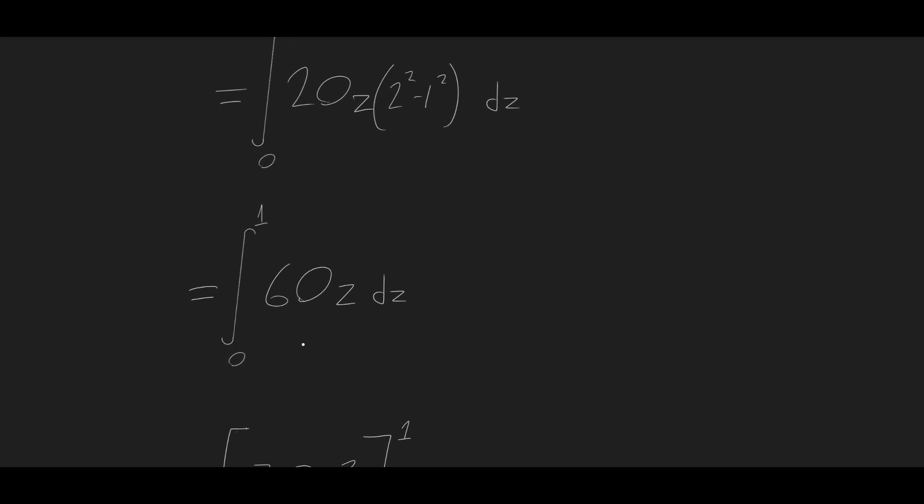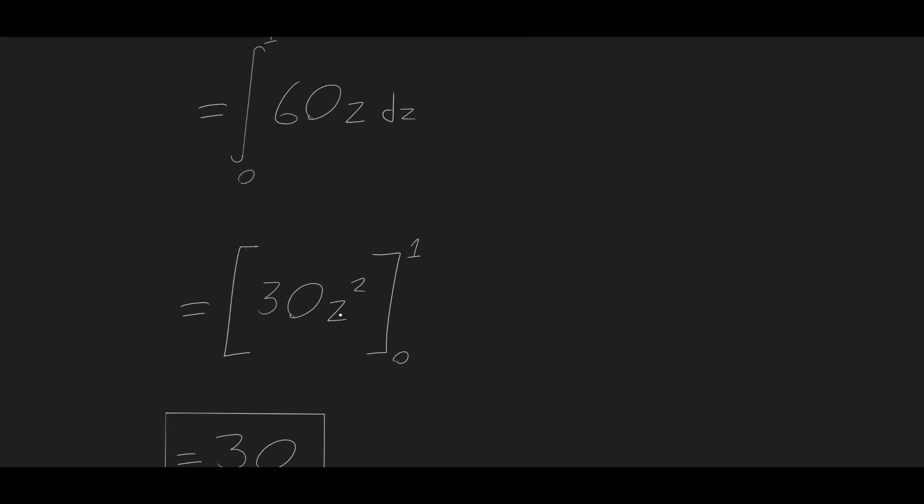And then we finally have one integral left over. And we get the integral from 0 to 1 of 60z, dz, which gives us 30z squared from 0 to 1, or just 30.